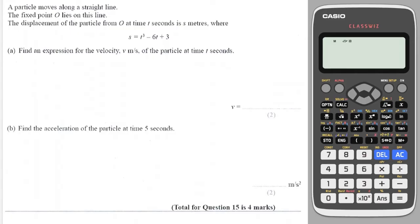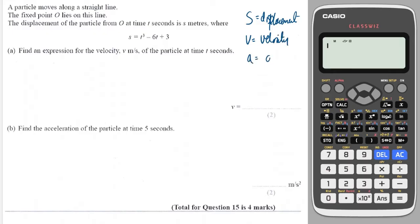The most important thing to remember when doing linear kinematics is that S is displacement, V is velocity and A is acceleration, and we differentiate downwards.